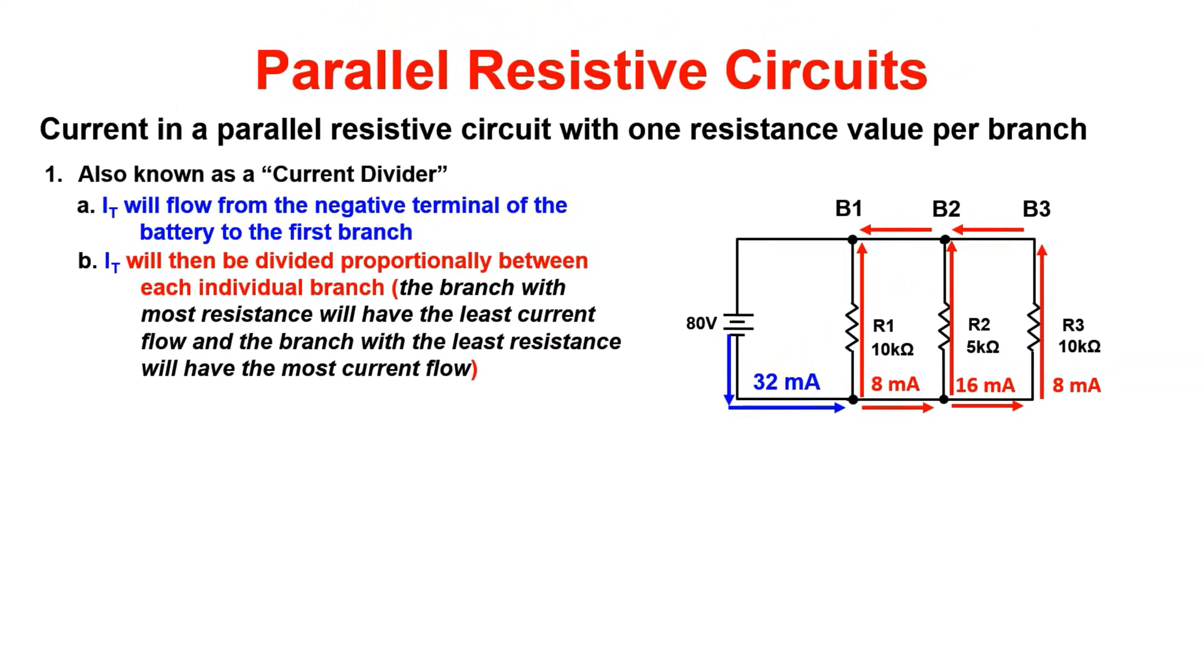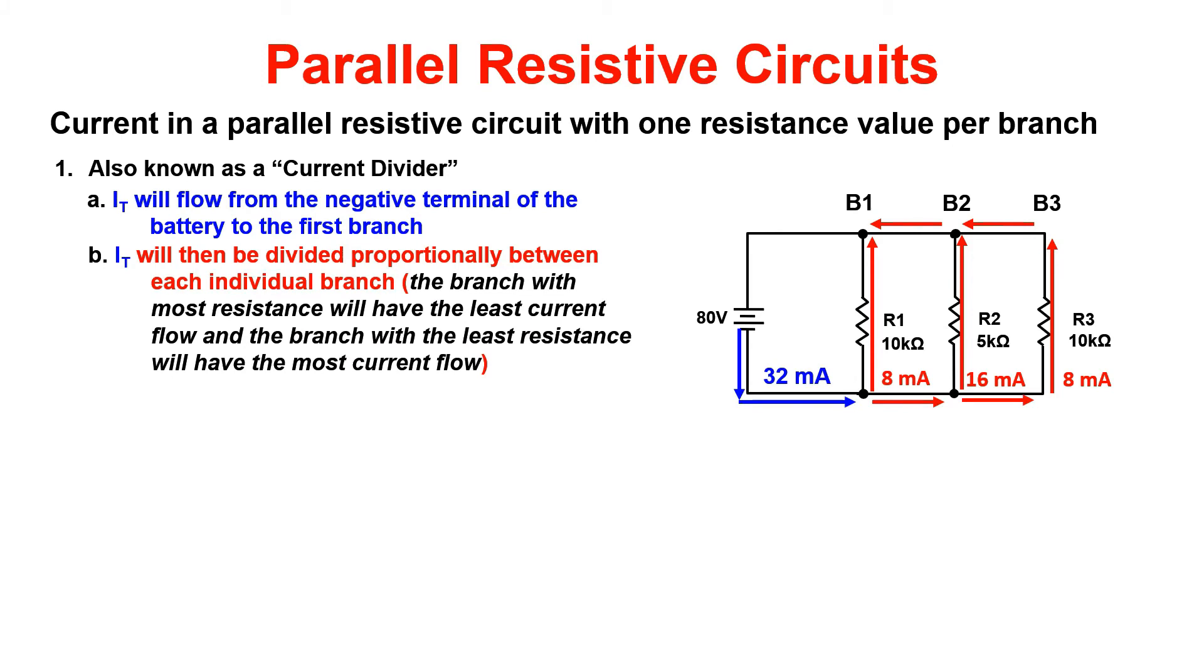One of the first things we did is we identified parallel circuits as current dividers. Current is going to flow from the negative terminal to the first branch and then is proportionately divided between each individual branch. The branch with the most resistance will have the least current flow and the branch with the least resistance will have the most current flow.